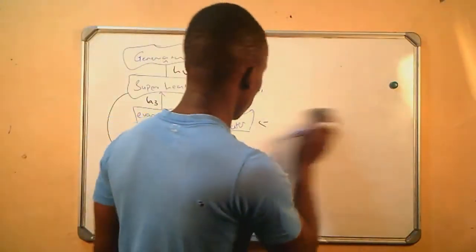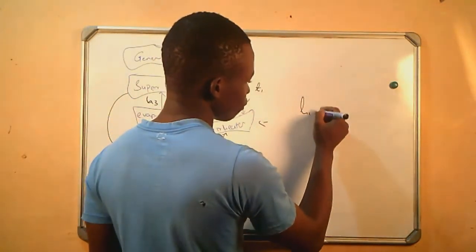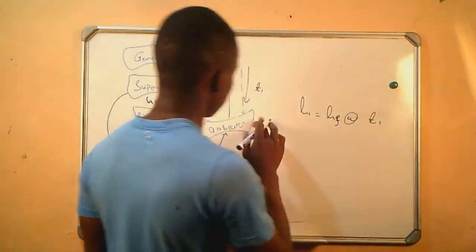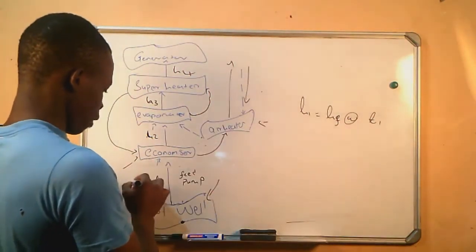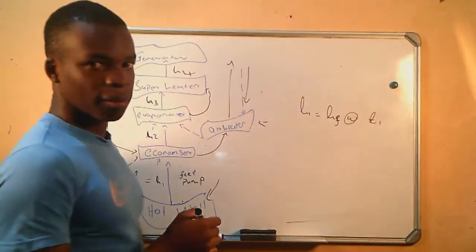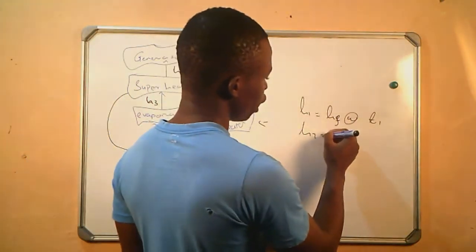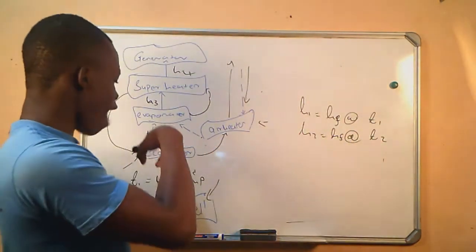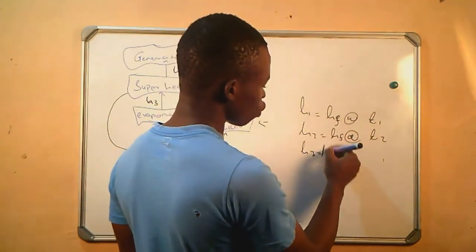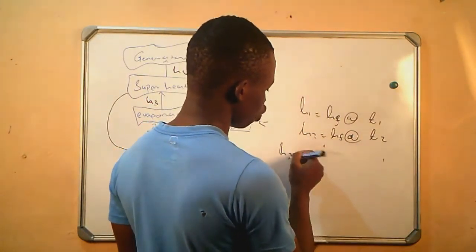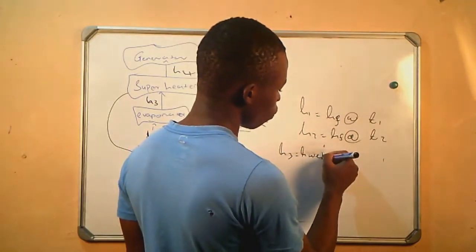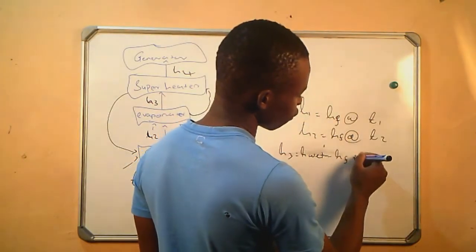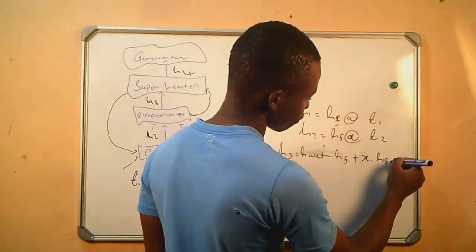H1 equals HF at temperature number one — the temperature of the water before the economizer. H2 equals HF at temperature number two, which is the temperature of the water after the economizer. H3 equals H-wet, which equals HF plus dryness fraction times HFG.